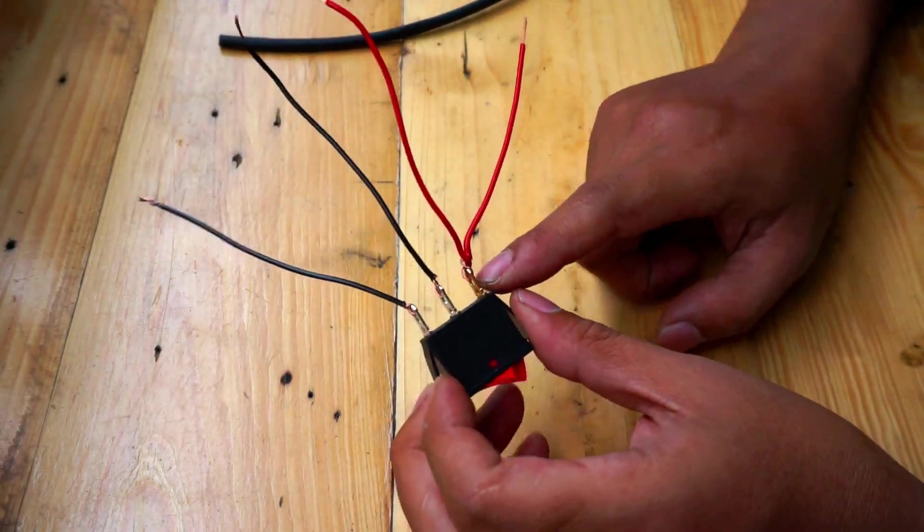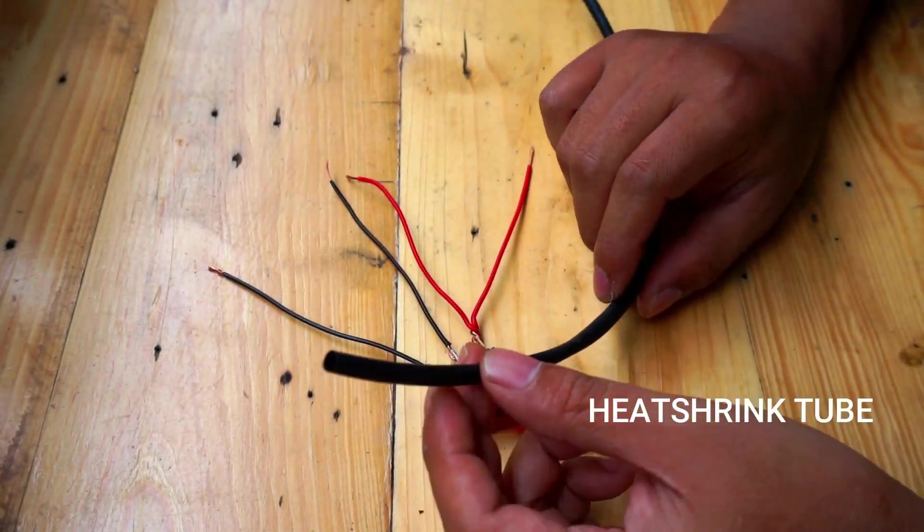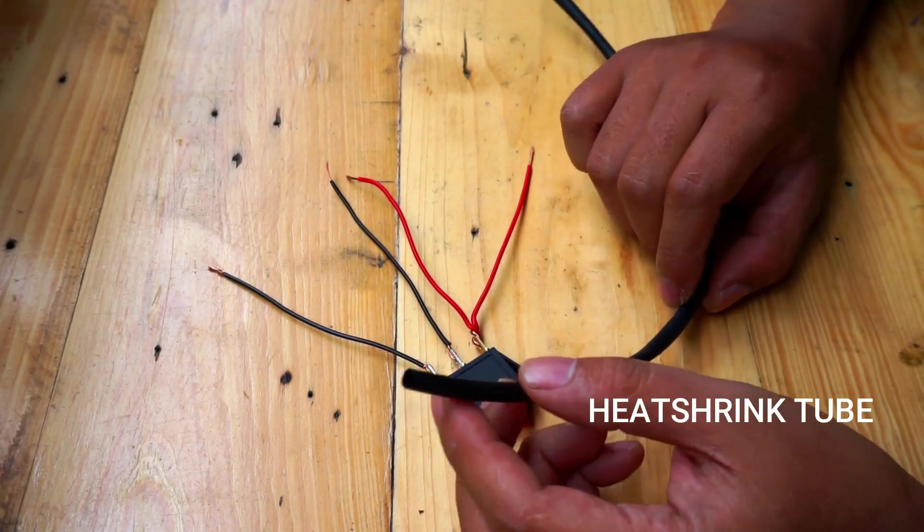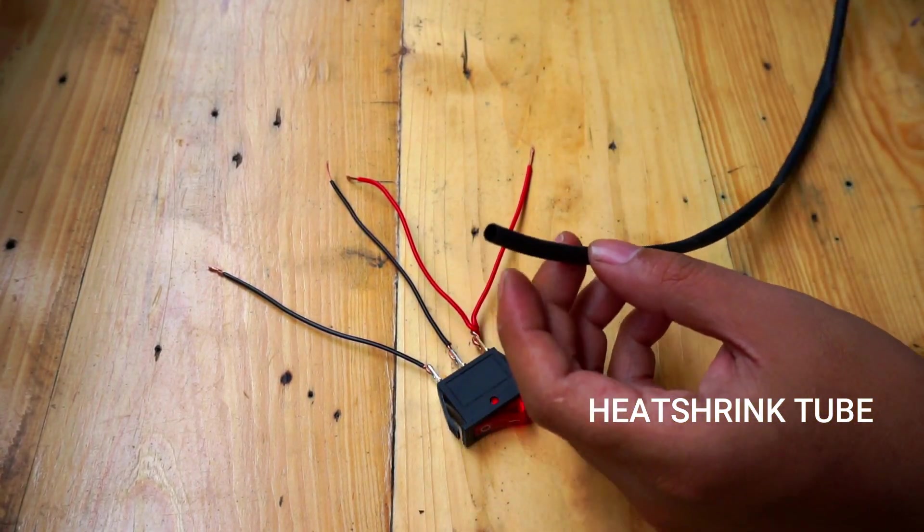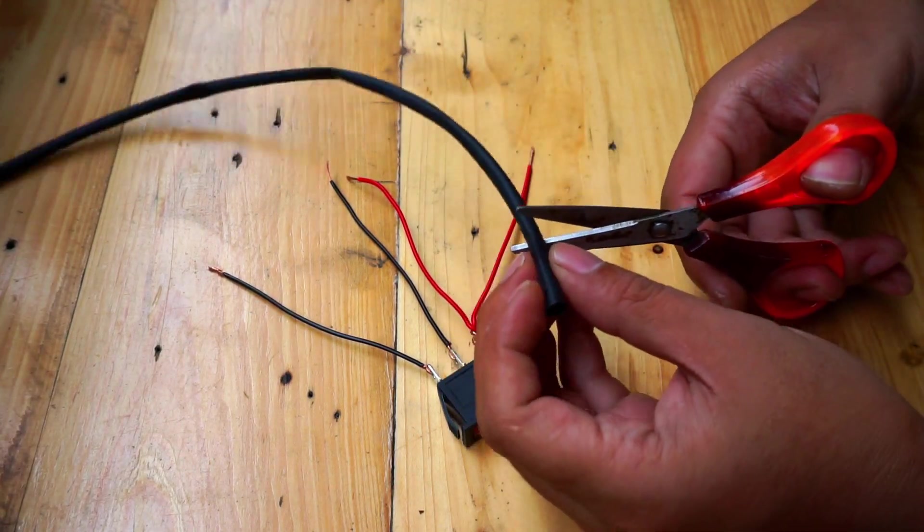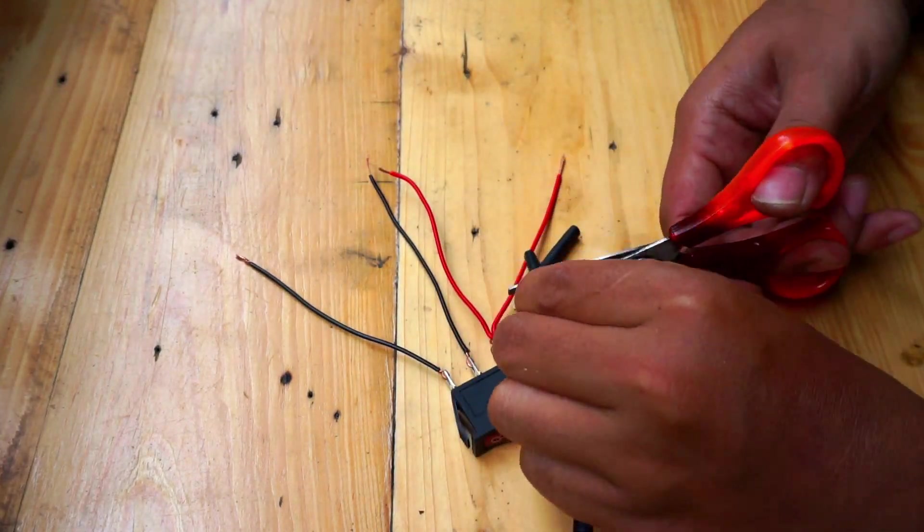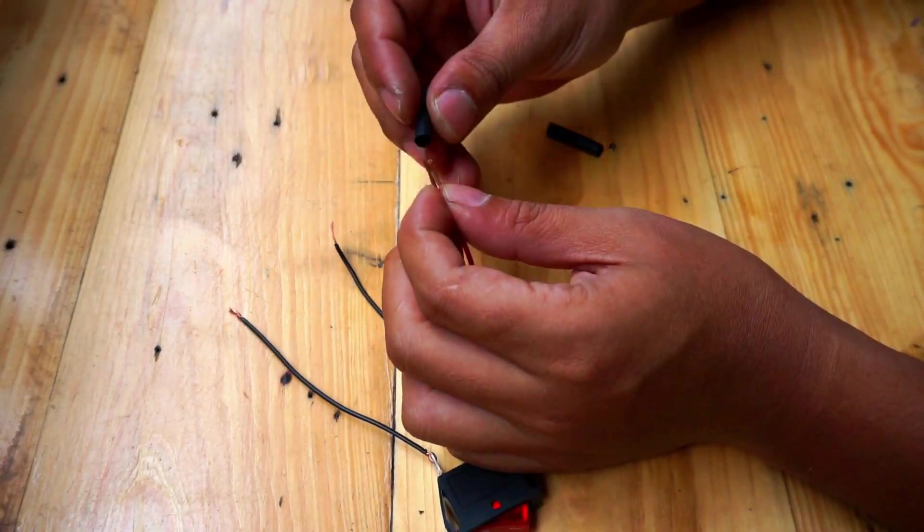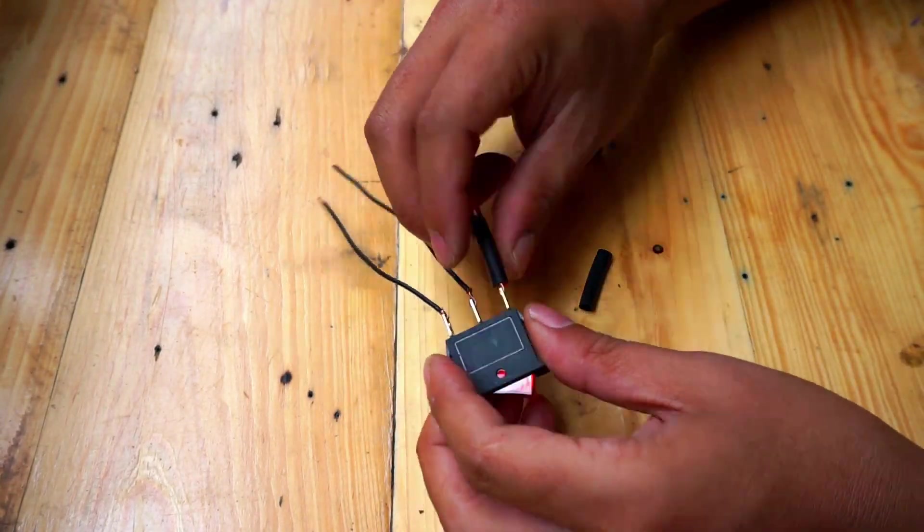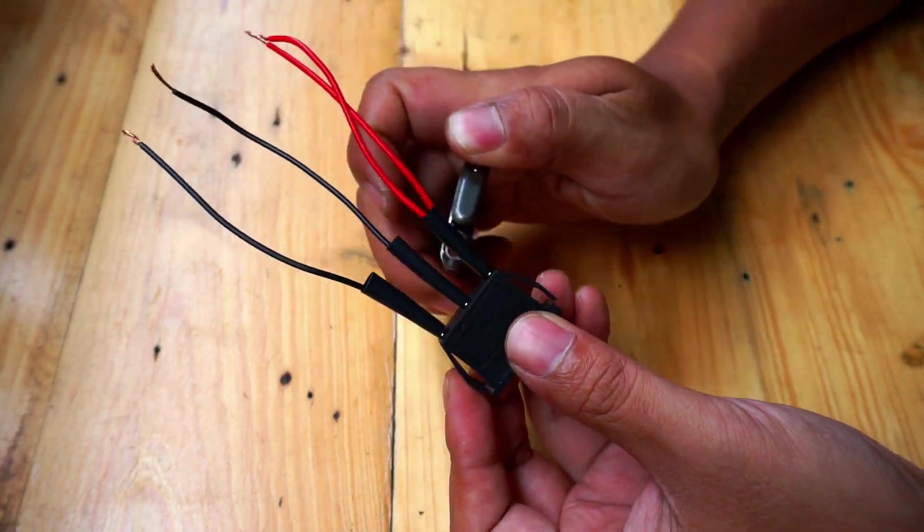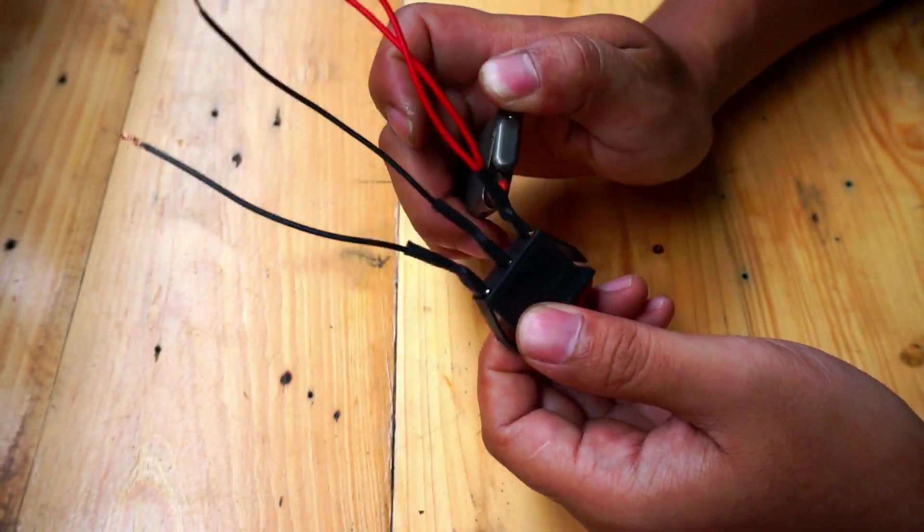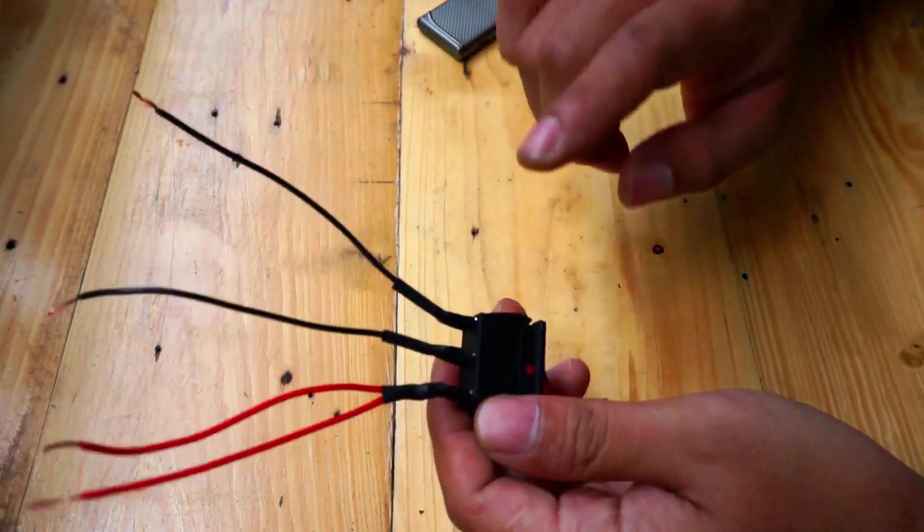To secure this from shorts we may use heat shrink tube to cover this pin. Just cut the tube in two centimeters, pass the wire through the tube, then heat it up. It's safe now.